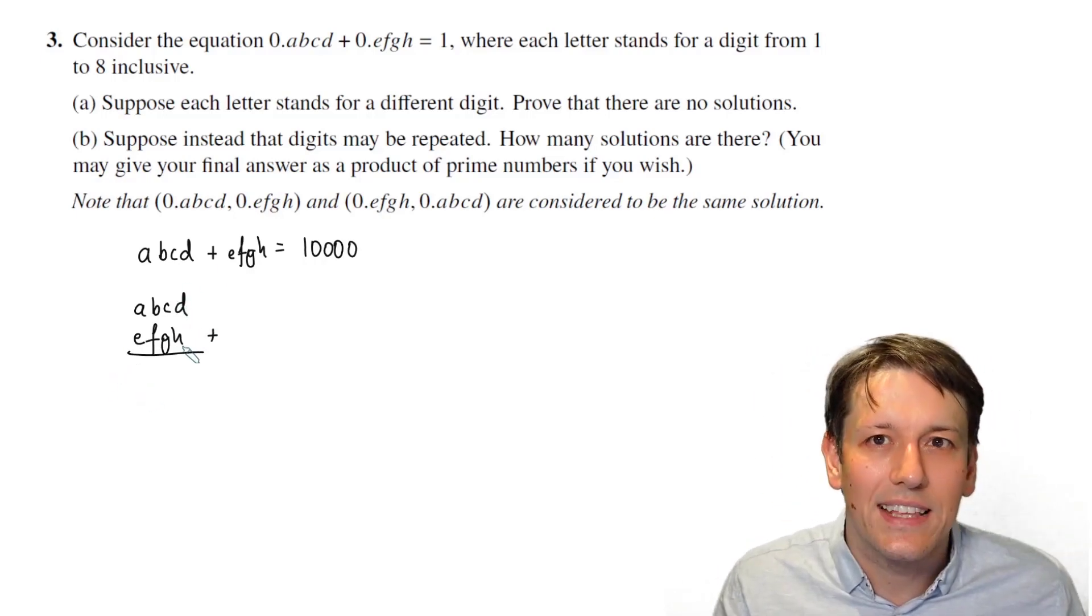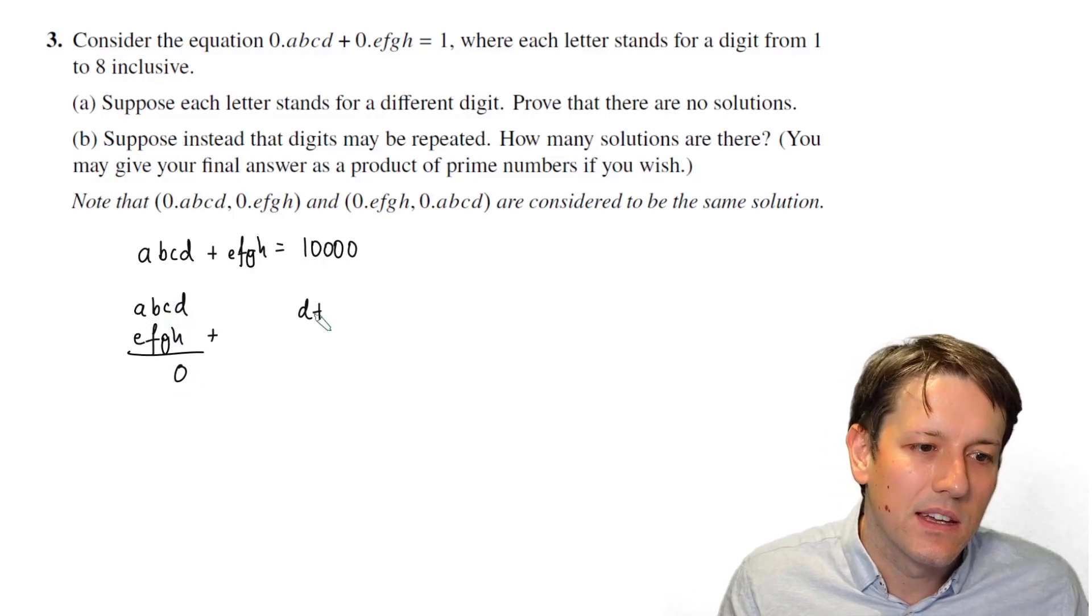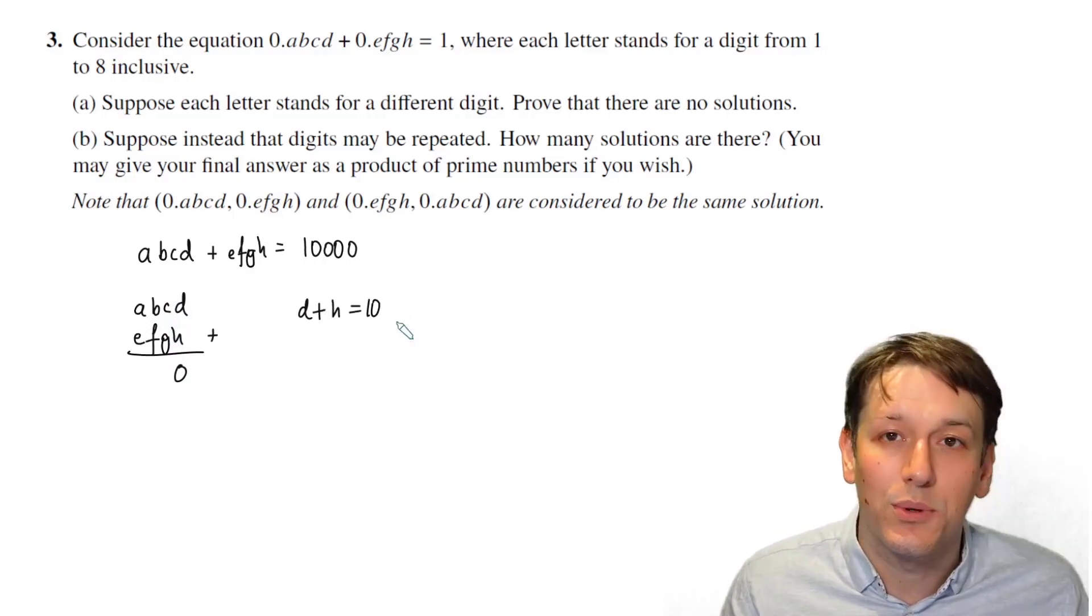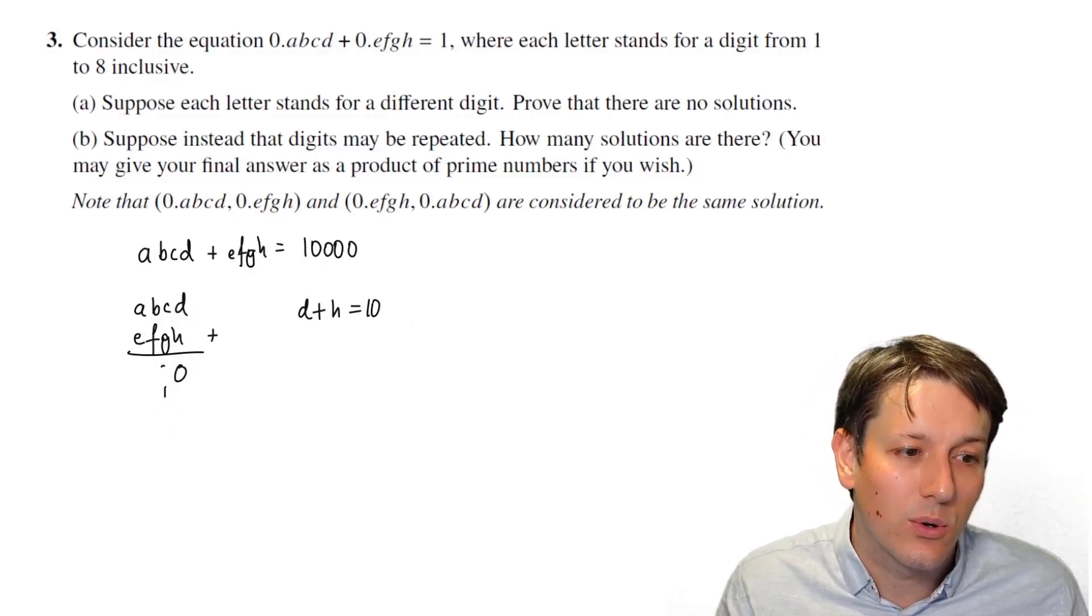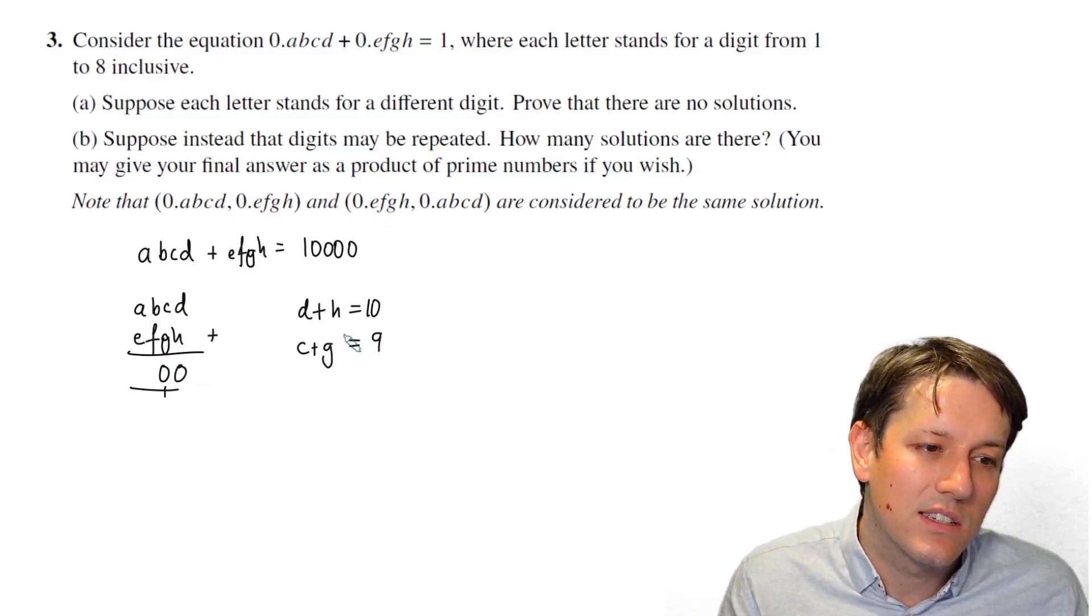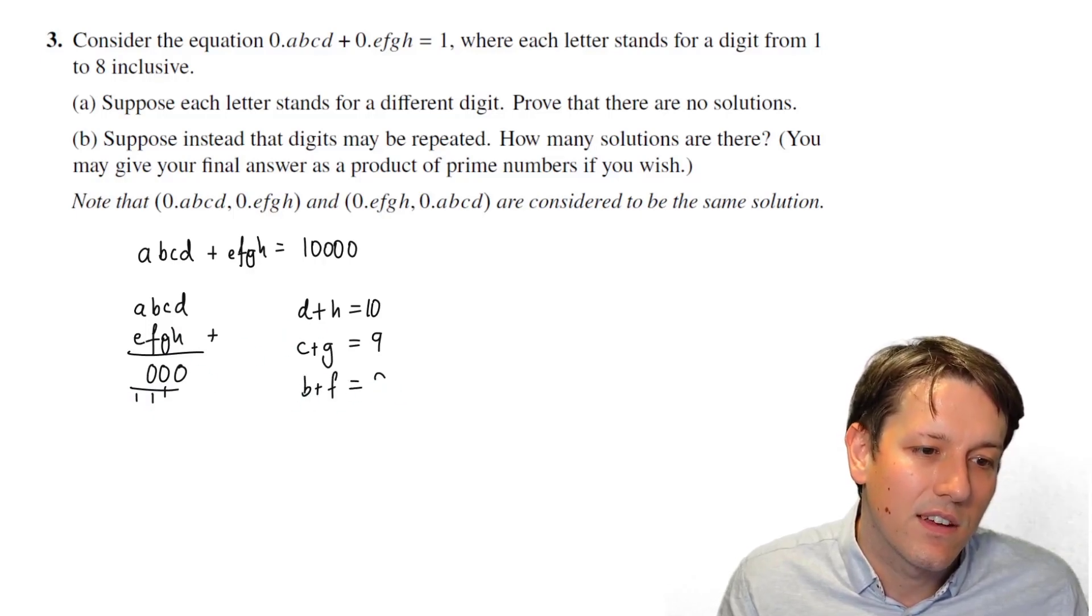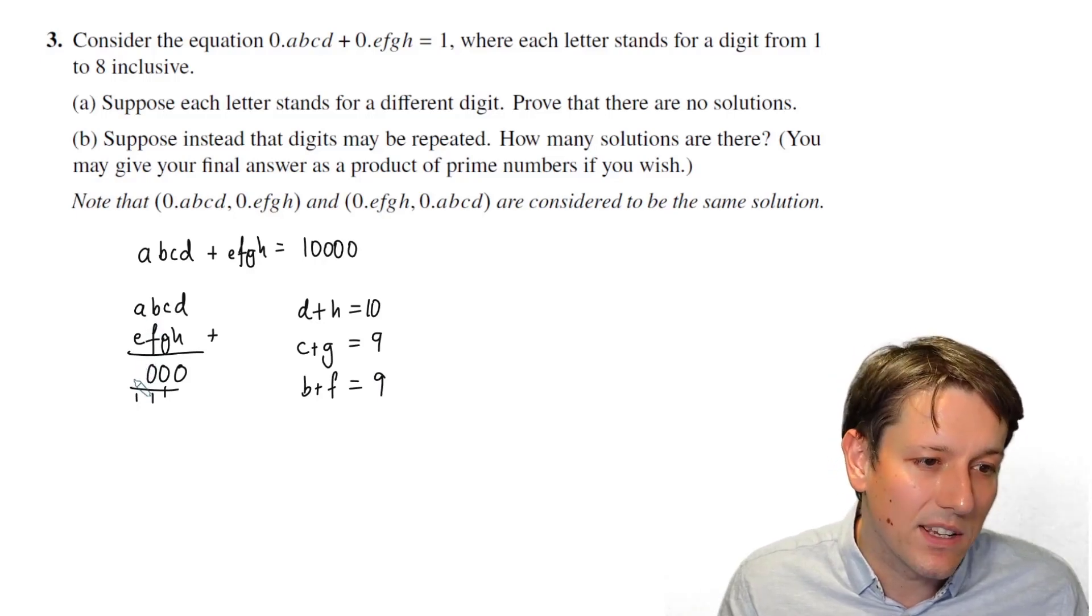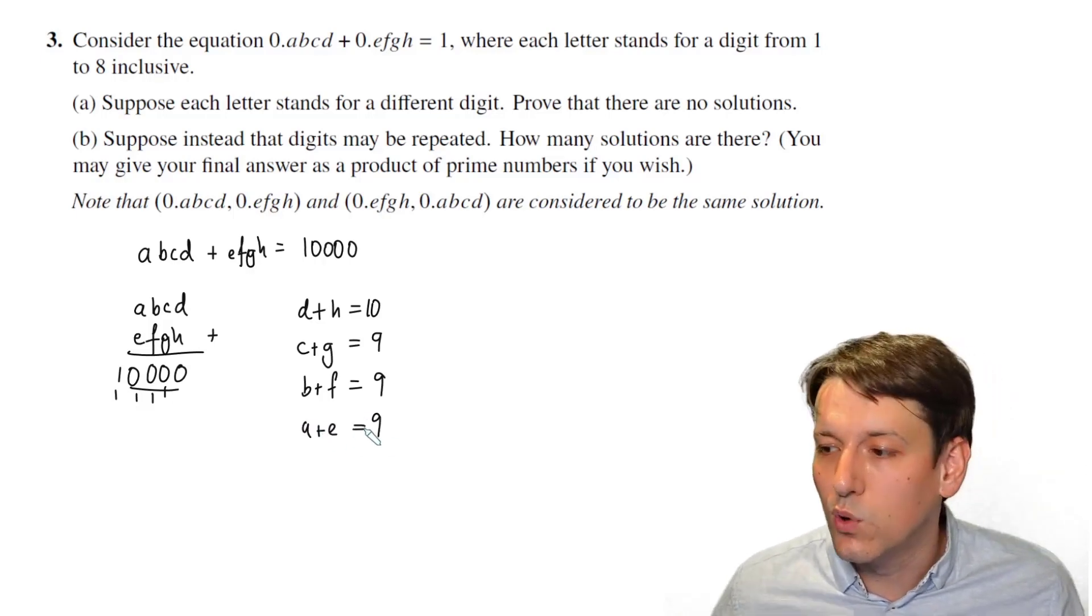Well, I know to begin with that when I add D to H, I've got to get a 0 here, and they can't be 0, so it must be that D plus H is equal to 10. And as I start writing this sum down, I see I get a carry of 1 here. Now, C plus G also has to give us a 0, but I'm adding this 1 that I've carried, so it must be that C plus G is equal to 9. And then I carry a 1 again, and then B plus F has to be 9 because of the carried 1 as well to make 10 in total. So I have B plus F is equal to 9. And then similarly, A plus E is 9, and I finally carry the 1 and get 10,000.